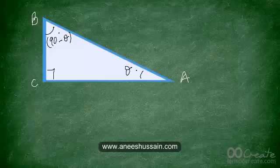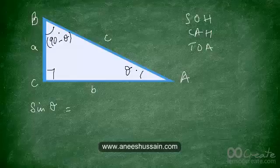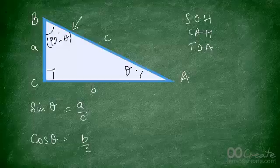Let's say the sides opposite the angles are small a, small b, and small c. Sine of theta is opposite over hypotenuse, which is a upon c, and cos of theta is adjacent upon hypotenuse, which is b upon c. But all trigonometric ratios are in relation to a certain angle, so what if we focus on angle B, which is 90 minus theta, and find sine of 90 minus theta?